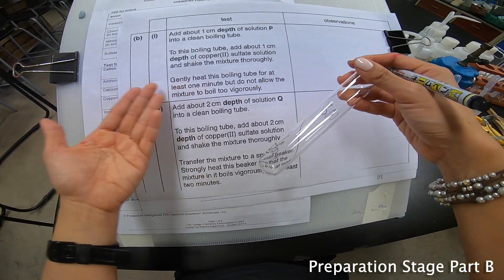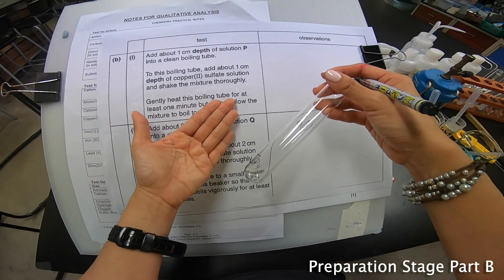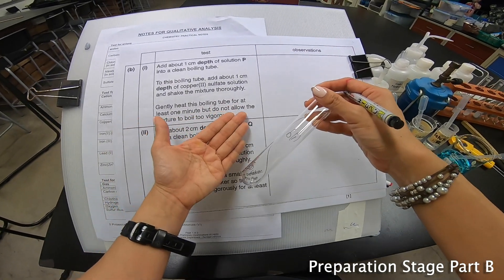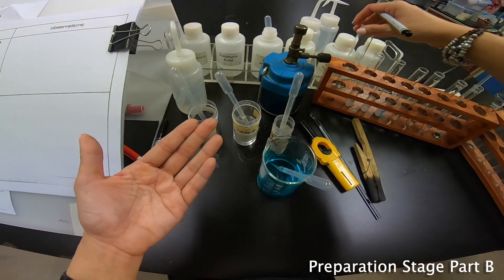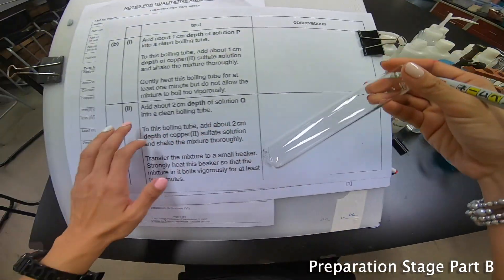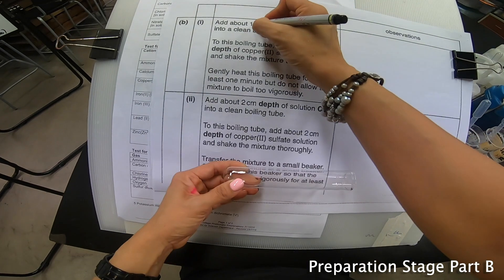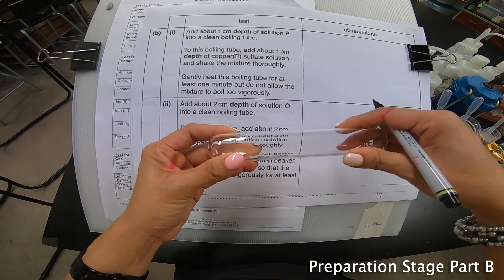And then you have to gently heat this test tube for at least about 1 minute and do not allow the mixture to boil too vigorously. So I'm going to put this back here. Now next part, to add about 2 cm depth. Now from 1 cm depth I become 2 cm depth. So make sure I put 2 cm.